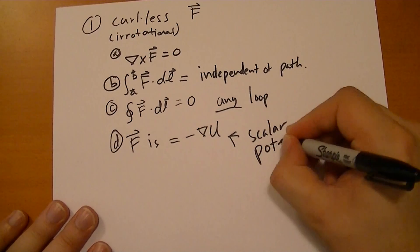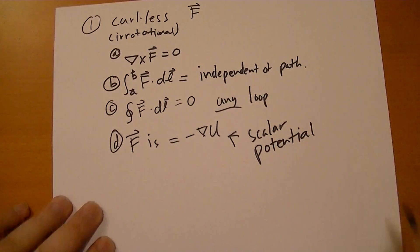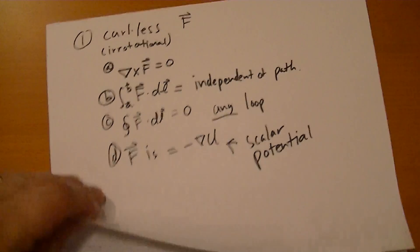We call U the scalar potential, not to be confused with potential energy. Unfortunately it was named poorly, but that's not a huge issue. The second one has to do with divergence-less, or solenoidal.